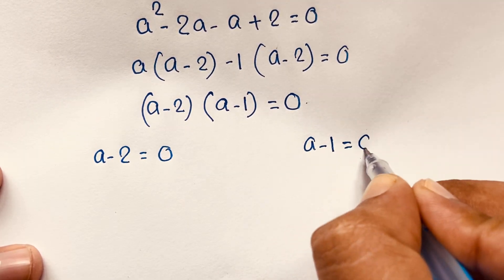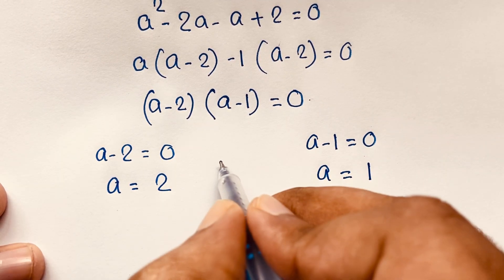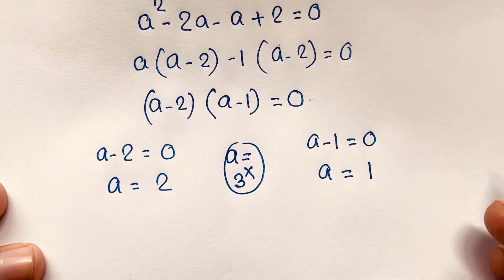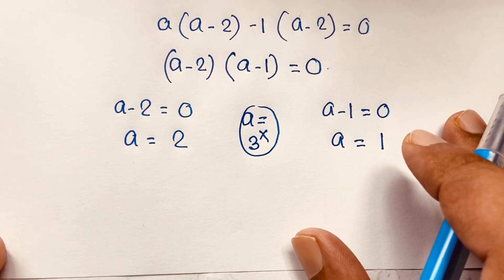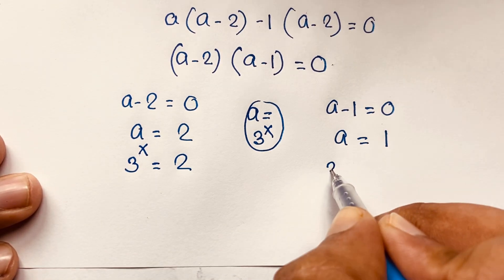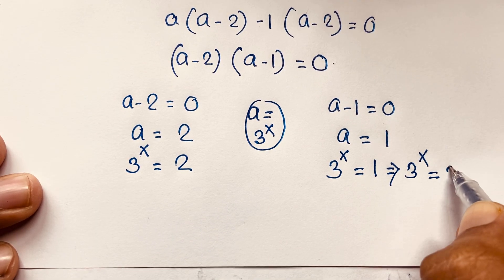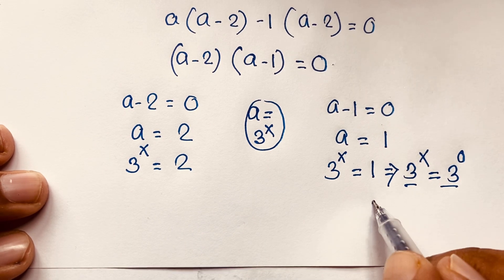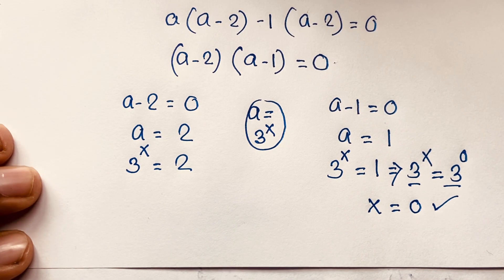We find two cases: a minus 2 equals 0, giving a equals 2; and a minus 1 equals 0, giving a equals 1. Recalling that a equals 3 to the power x: for a equals 1, we get 3^x equals 3^0, so x equals 0. This is one final answer.